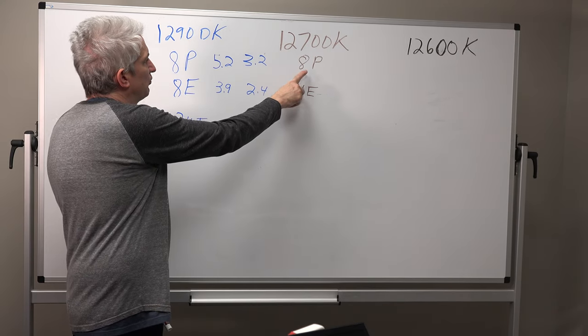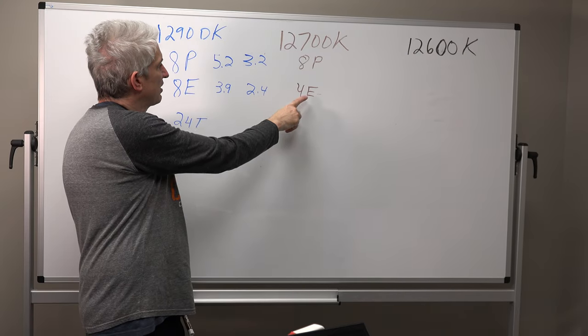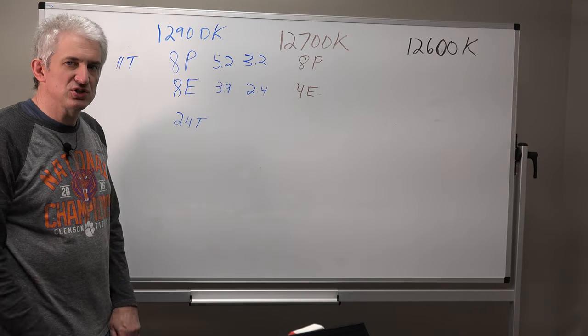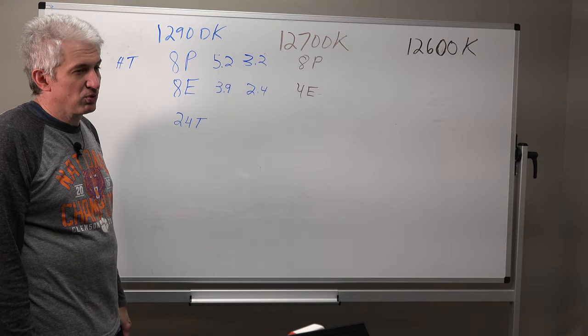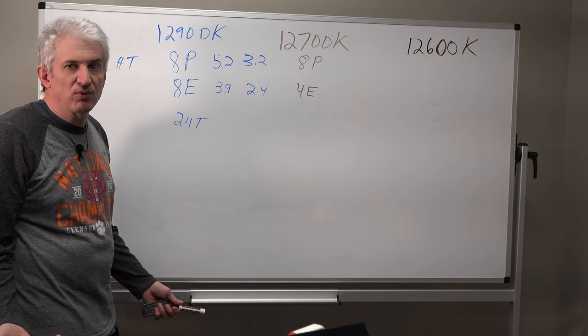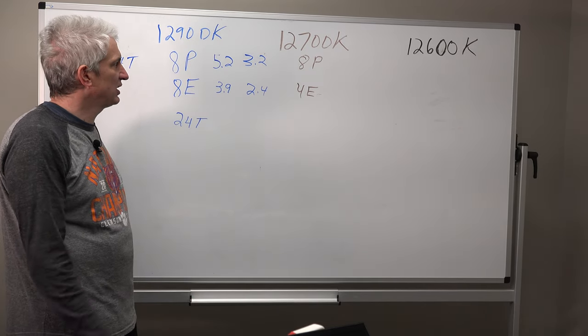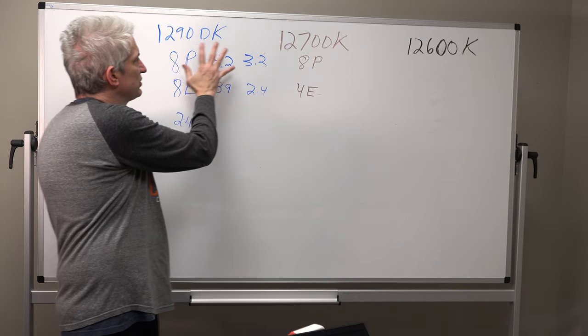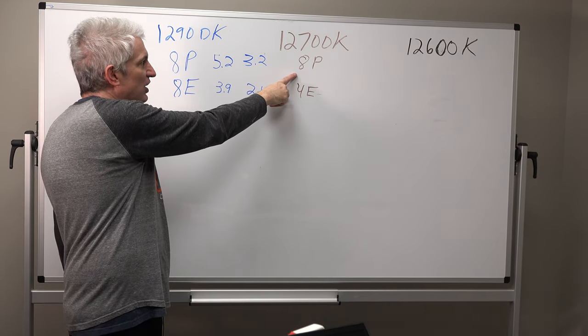But if you want best bang for buck, that's going to be the 12700K. Again, because it has eight performance cores, just like the 12900K, and you're only sacrificing four of the efficiency cores. And really, you probably don't need more than four efficiency cores. I mean, how many cores do you need for background windows tasks? So again, that's why testing has shown this chip really holds its own with the 12900K. And I can tell you, this chip runs a lot cooler too.